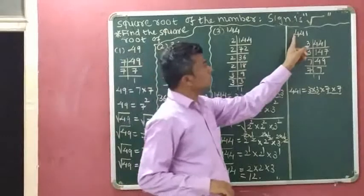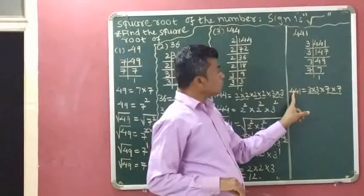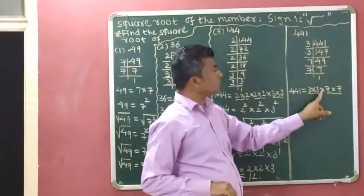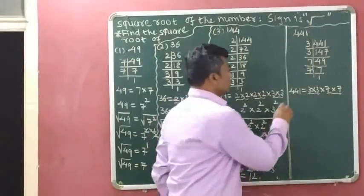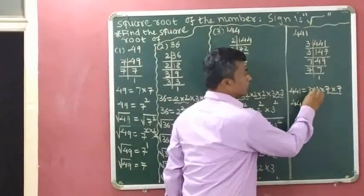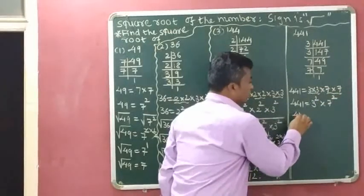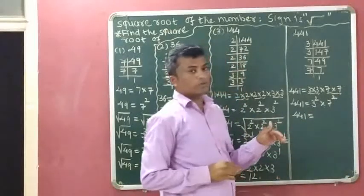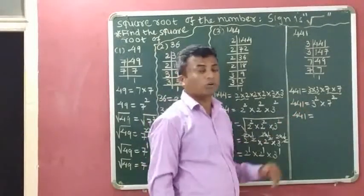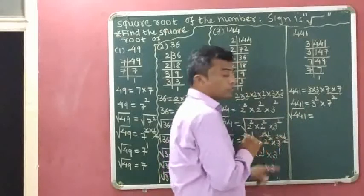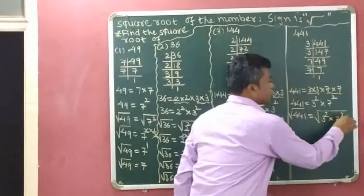Next question: 441. The prime factorization of 441 has already been identified: 441 = 3 × 3 × 7 × 7. So 441 = 3 squared × 7 squared. To find the square root, we apply the square root sign on both sides: square root of 441 equals square root of 3 squared times 7 squared.